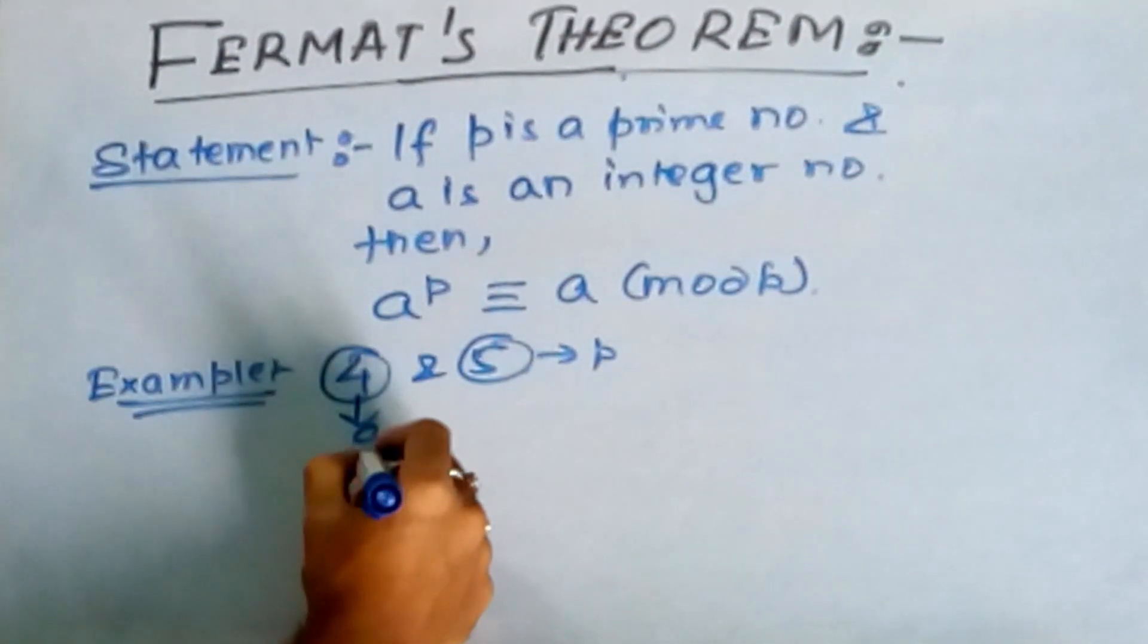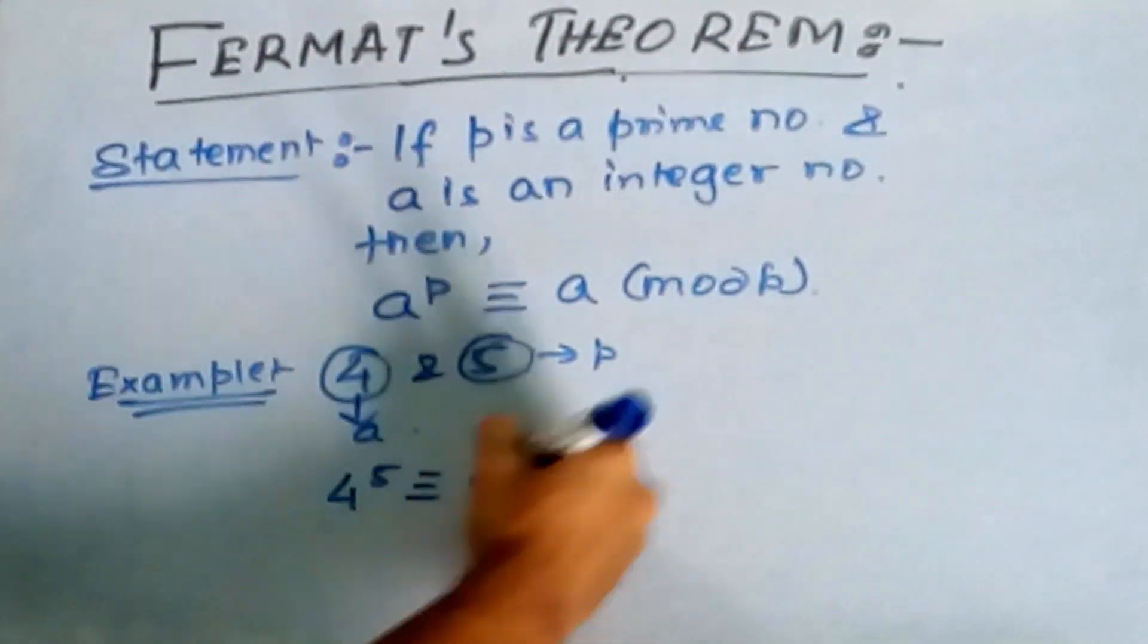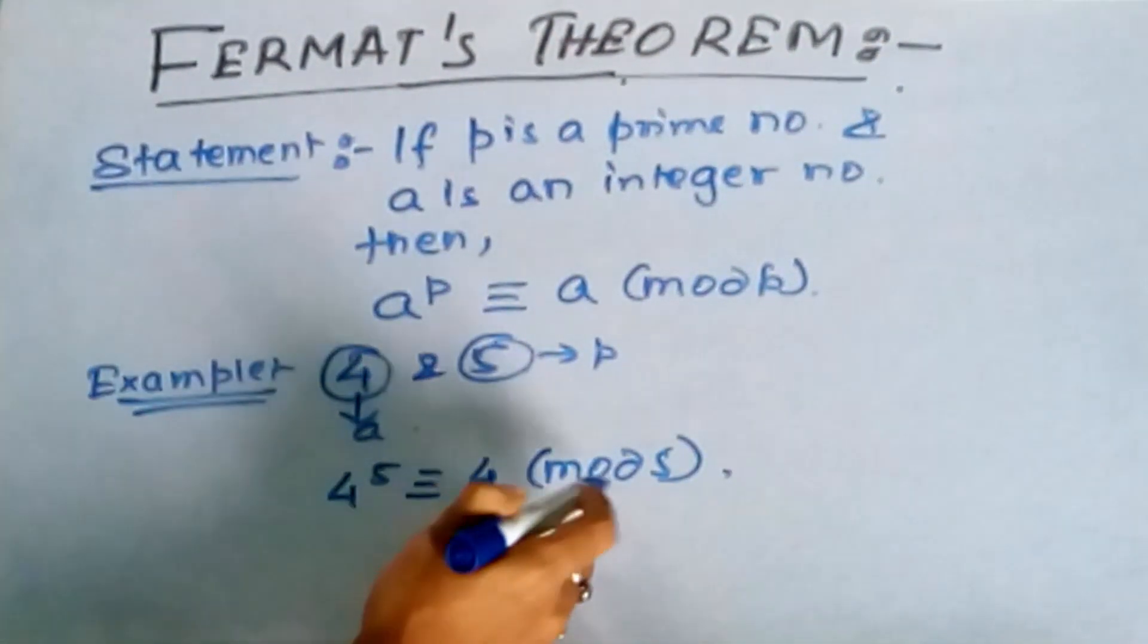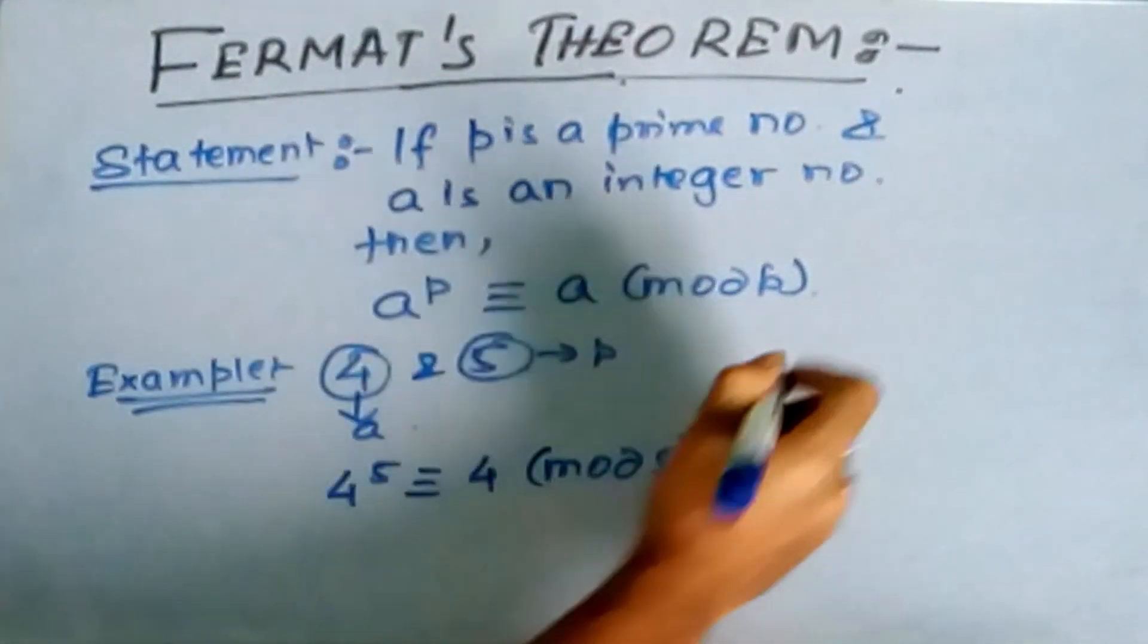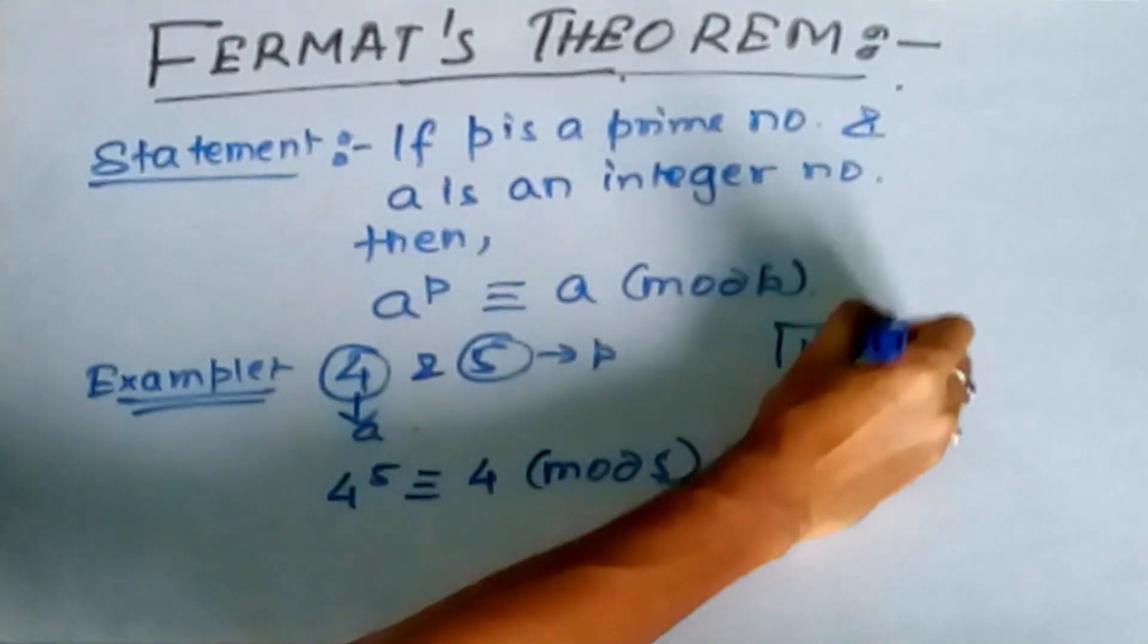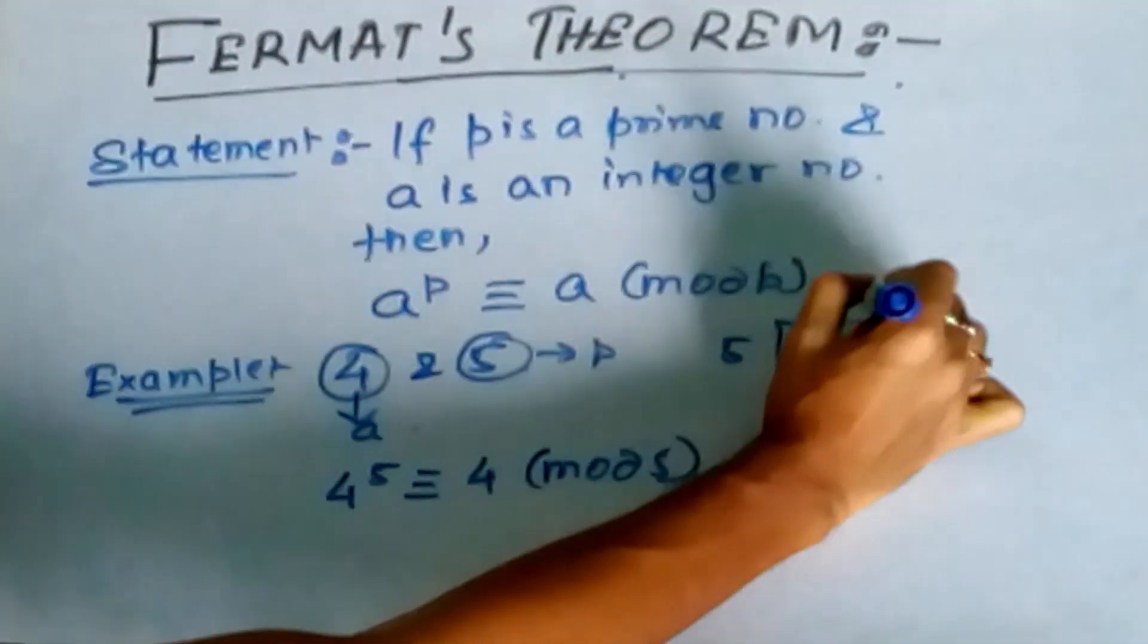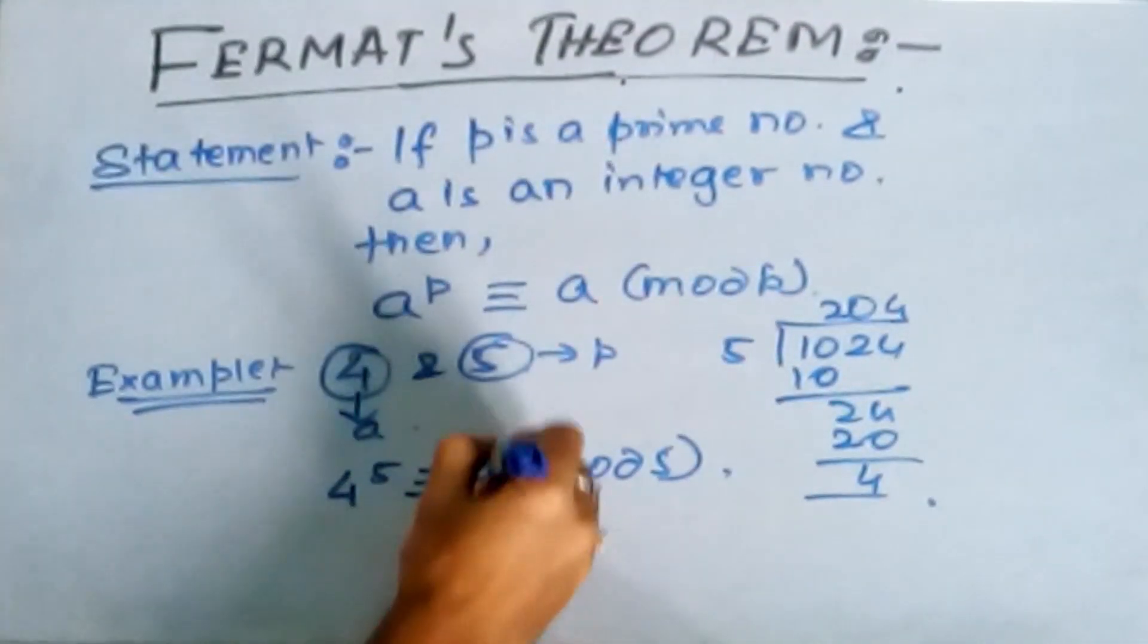So the statement says 4 to the power 5 is congruent to 4 mod 5. If you don't know about the modulo operator, I would suggest to see my previous lectures. So you can check it manually also. So 4 to the power 5 is 1024. If you divide with 5, it gives us 1024 divided by 5, that is 204, the remainder is 4.